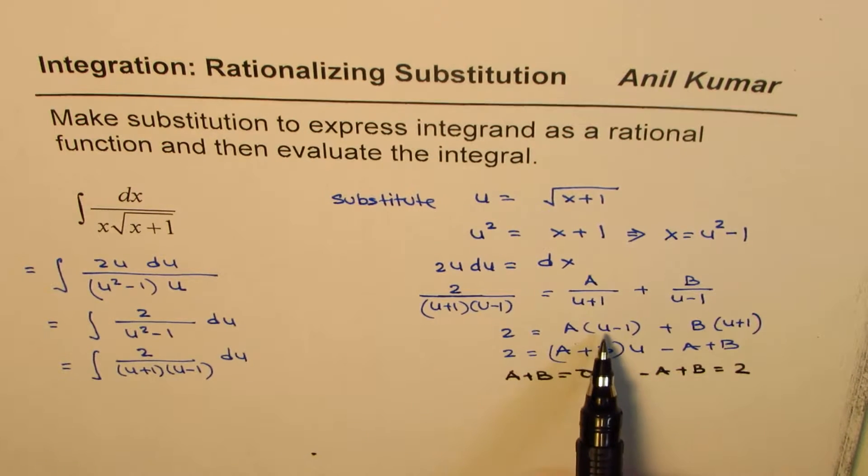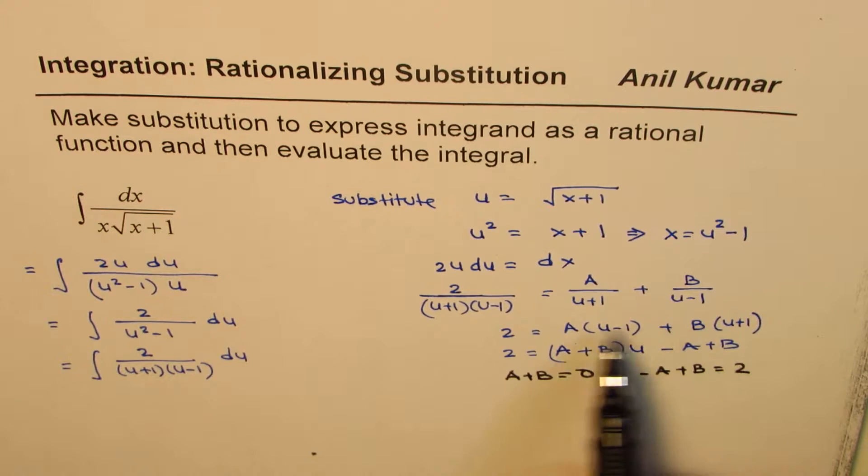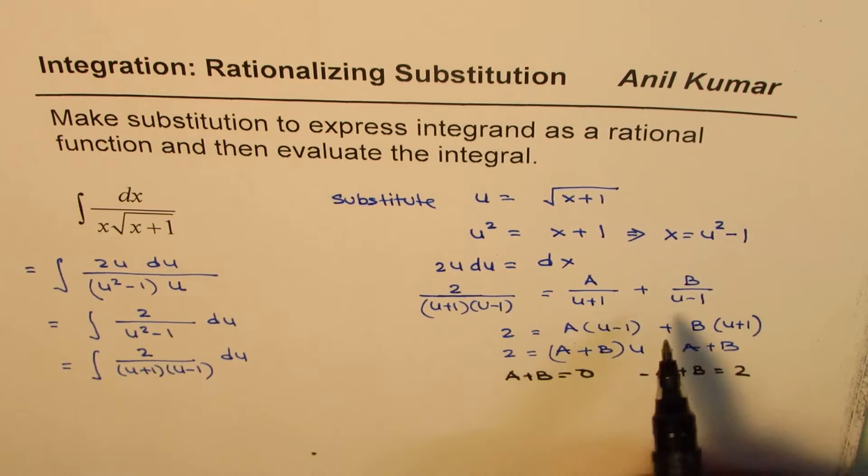Alternate way could have been if I substitute 1 here a becomes 0. b will be 2, 2b. 2b equals to 2 will give me b as 1 answer. So we could do like that also.